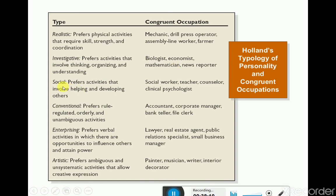Social personality prefers activities that involve helping and developing others — suitable jobs include social worker, teacher, counselor, and clinical psychologist. Conventional personality prefers rules, regulated orders and structured activities — suitable jobs include accountant, corporate manager, bank teller, and file clerk. Enterprising personality prefers verbal activities in which there are opportunities to influence others and attain power — suitable jobs include real estate agent, public relations specialist, and small business manager.